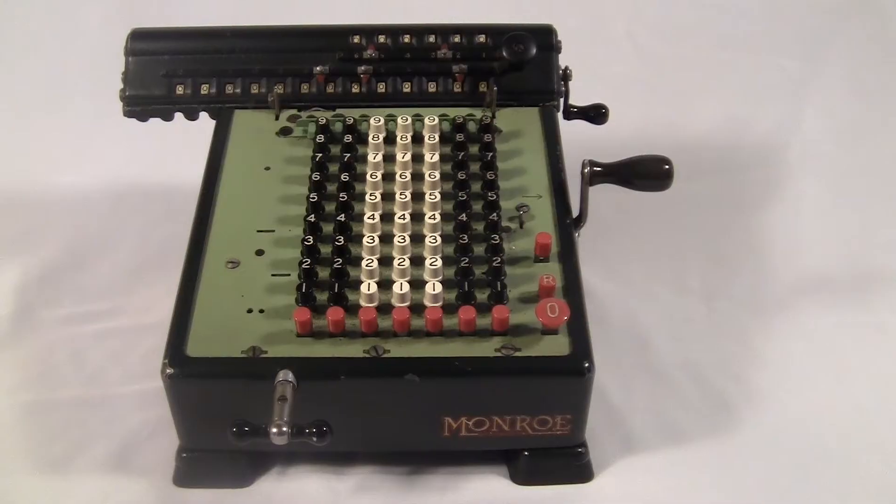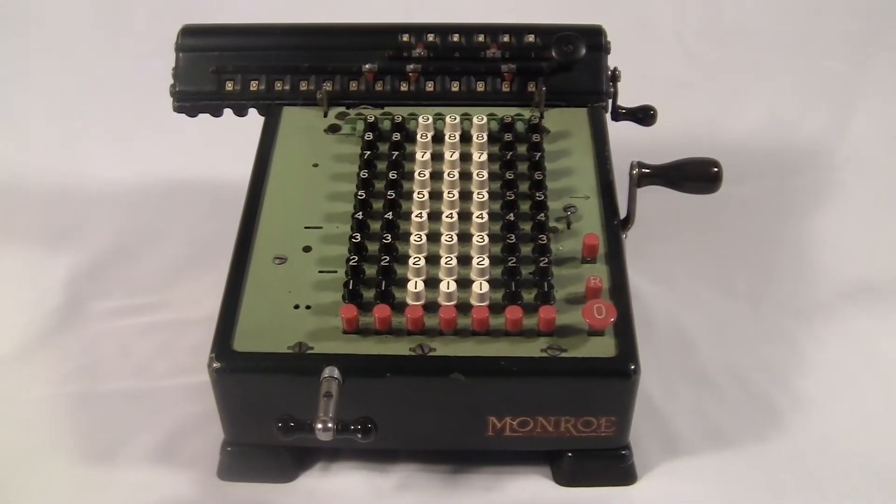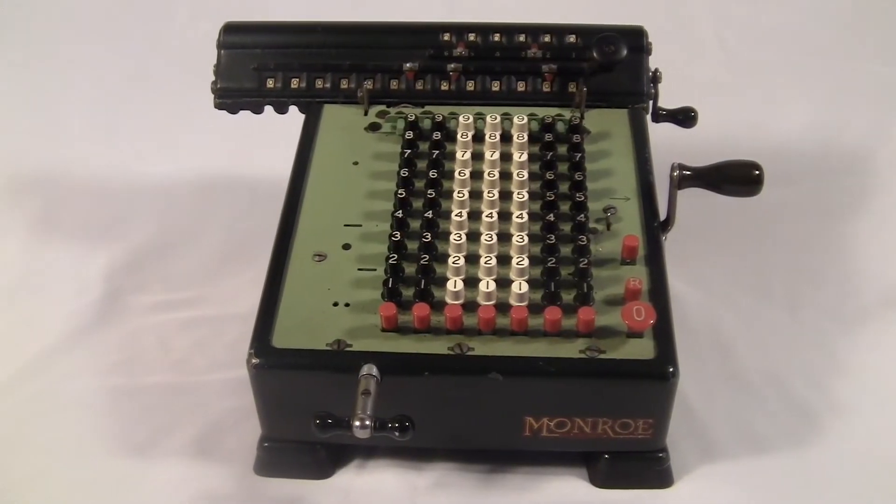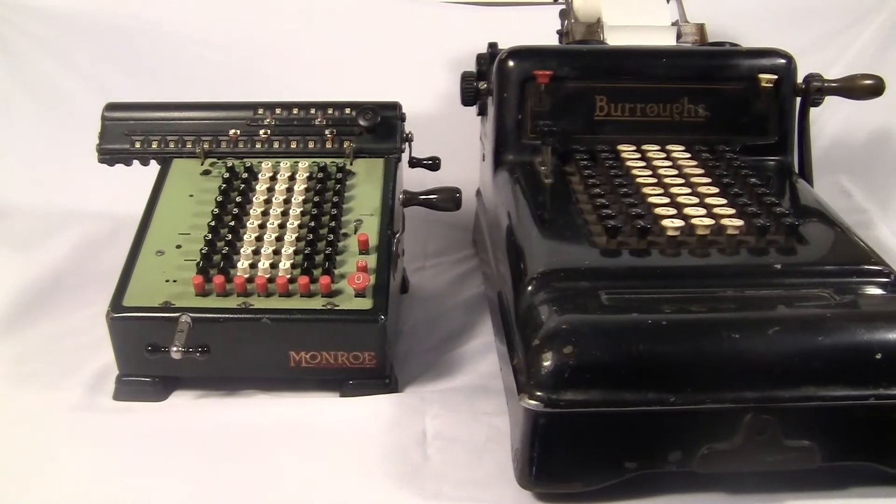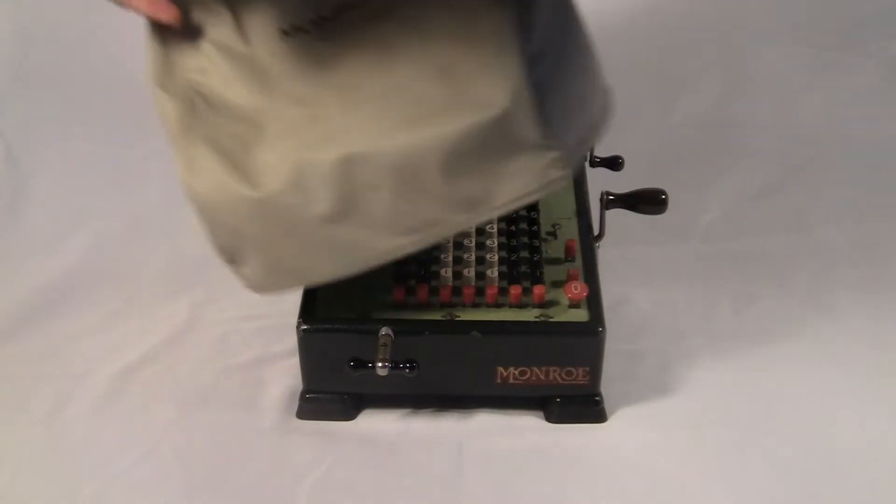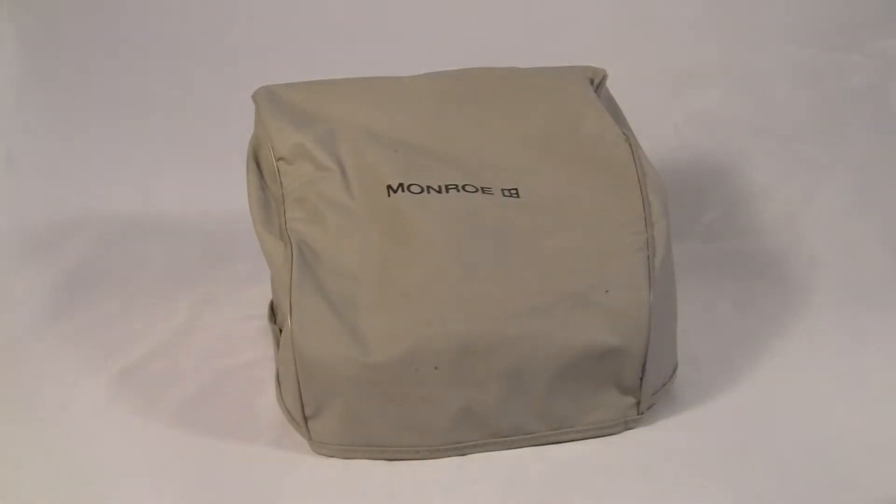This machine is surprisingly compact and lightweight for what it is. Look how small it is next to this Burroughs Class 3 machine, even though it's much more sophisticated. And look, I've even got the original vinyl dust cover.